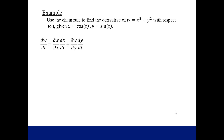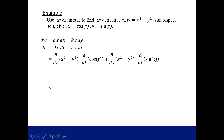Let's take a look at an example. We'll use the chain rule to find the derivative of this function with respect to t, given what x and y equal as functions of t. We take the partial derivative of w with respect to x and multiply it by the derivative of x, which is cosine t, with respect to t. For the partial derivative with respect to x, y is a constant, so the derivative of x squared is 2x. We know the derivative of cosine t is negative sine t.